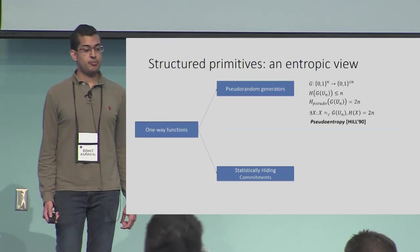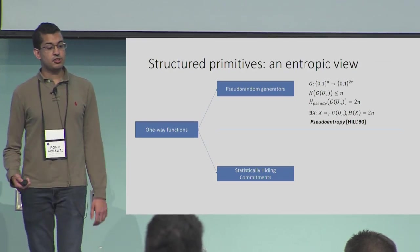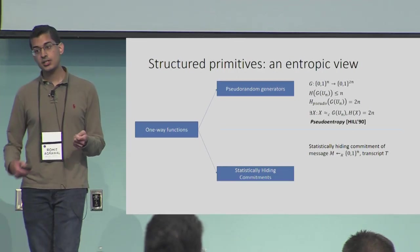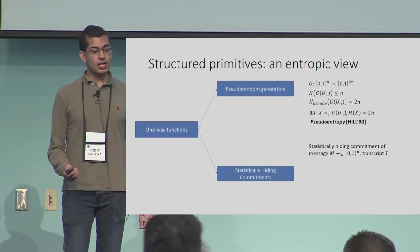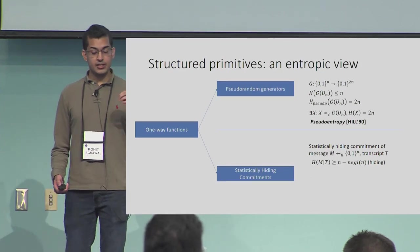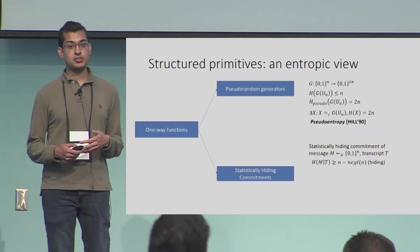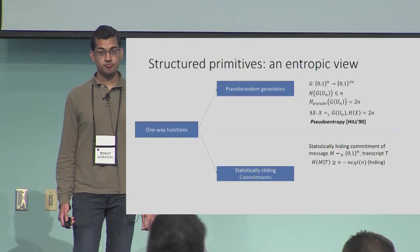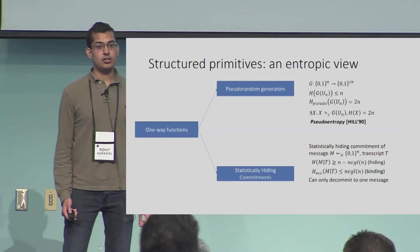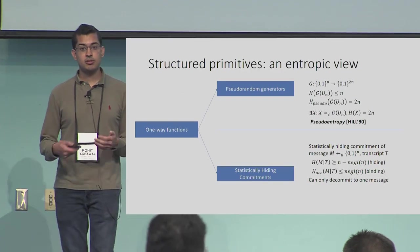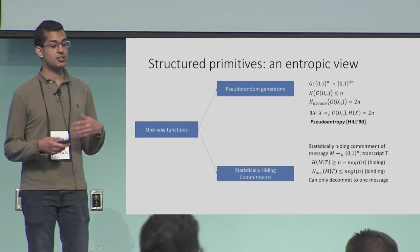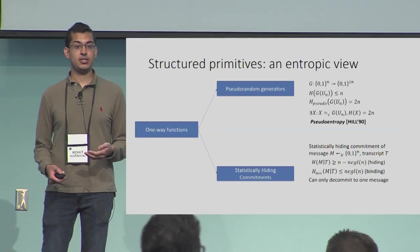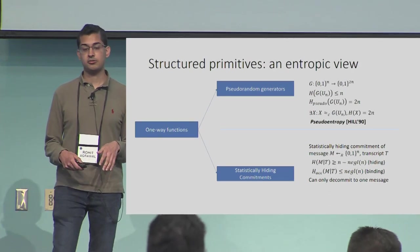There's a dual way to think about this in the context of a statistically hiding commitment. Consider committing to a message drawn uniformly at random from n-bit strings; when you execute the commitment protocol, you get some transcript T. By the statistical hiding property, the entropy of the message M given the transcript T is essentially n — it's statistically close to uniform. But the binding property says that the computationally bounded sender should not be able to decommit to more than one message; the computational entropy left to a computationally bounded adversary is in fact negligible.